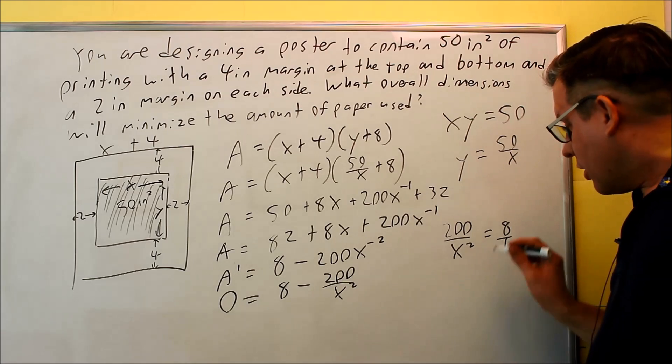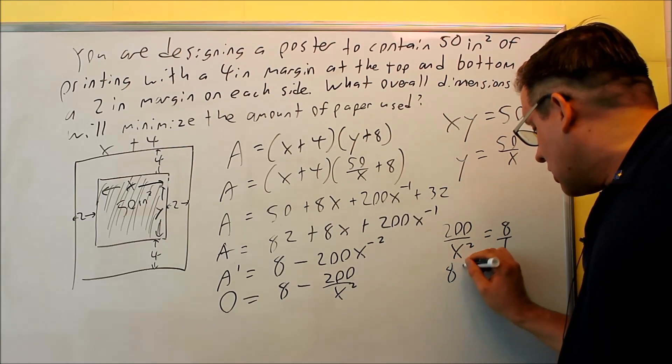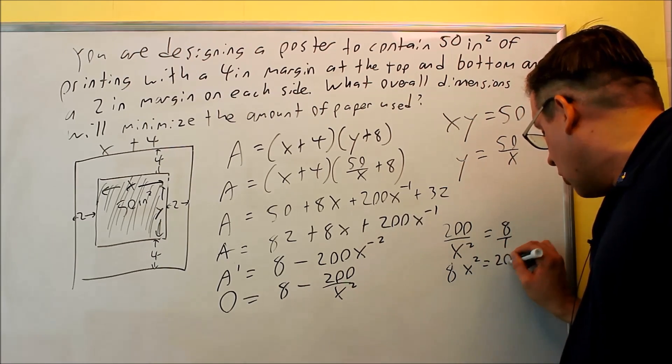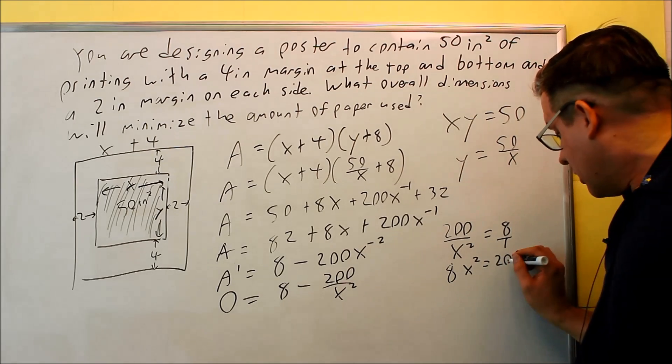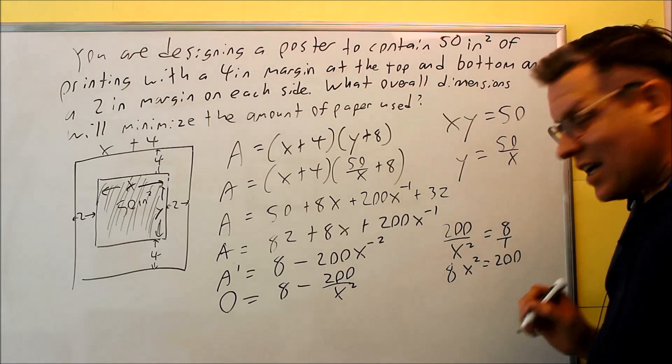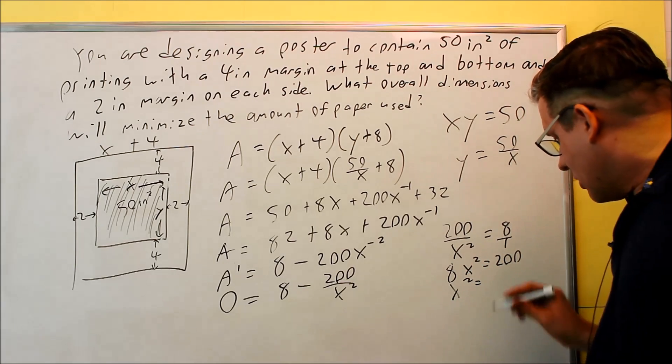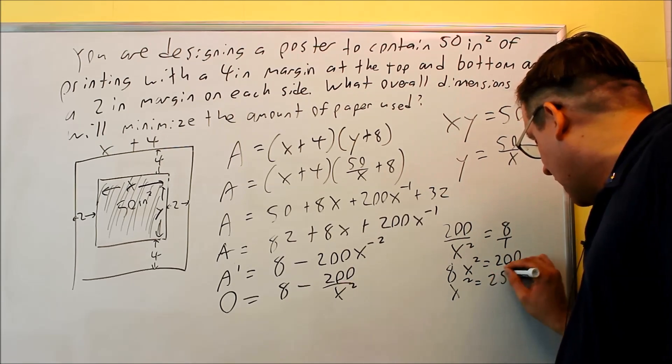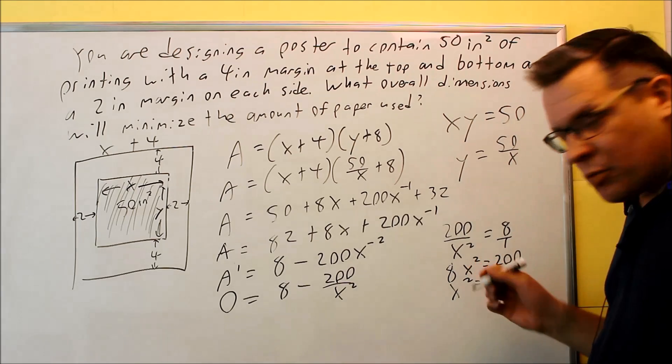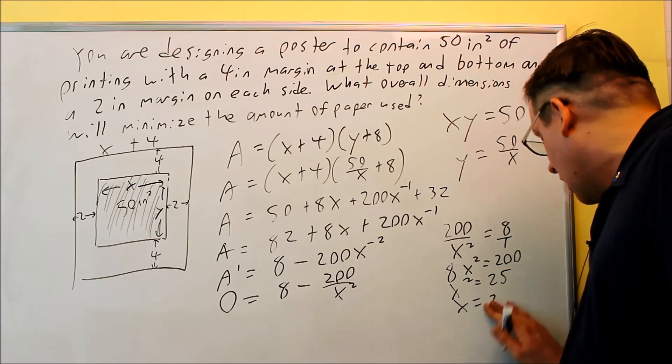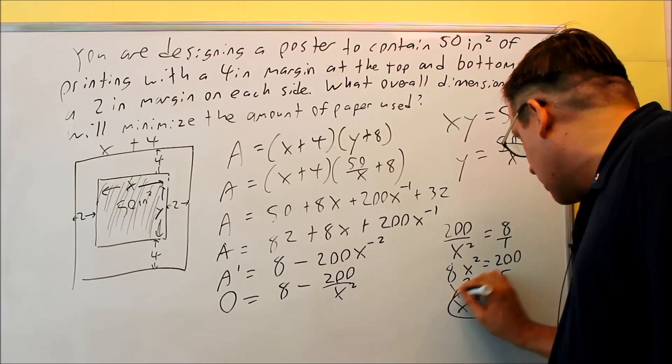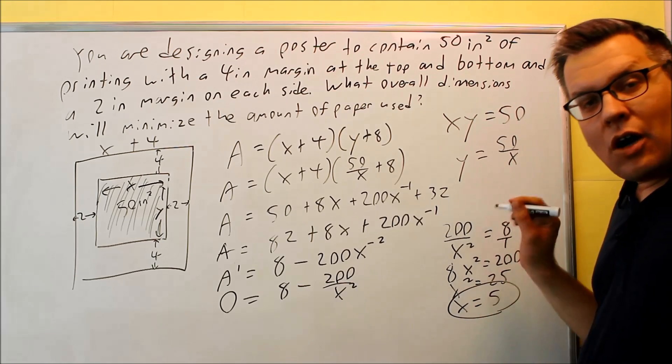200 over x squared equals 8 when I move this one over. We're going to do some cross multiplying here. So I get 8x squared is going to equal 200. I want to divide both sides by 8. So when you divide that by 8, you're going to get 25. And then square root of both sides, you're going to get 5 as your answer. So x is going to be 5.